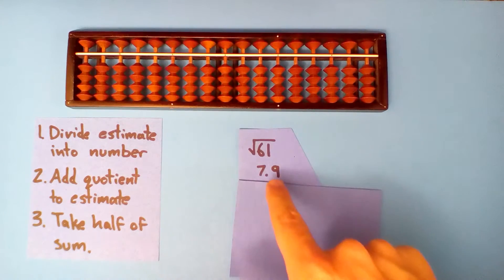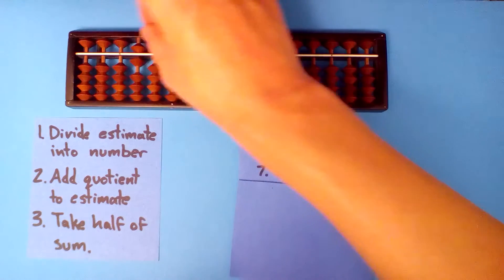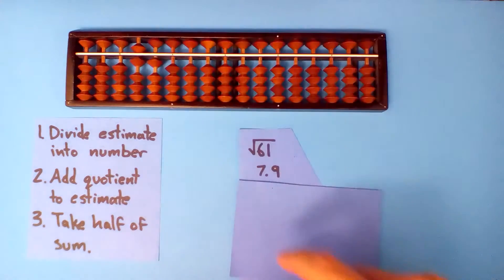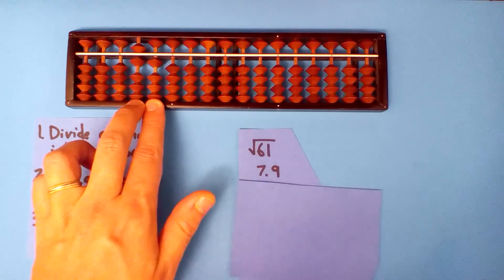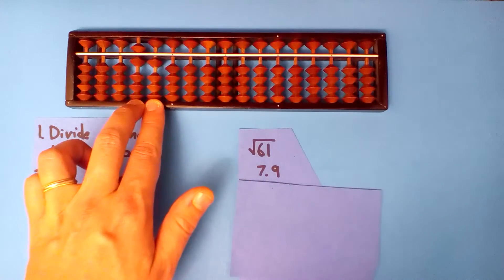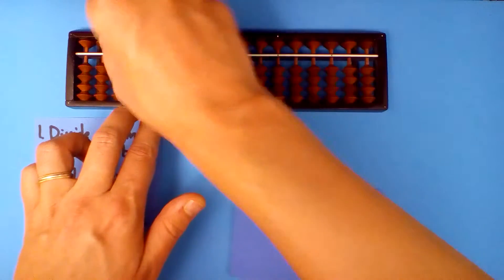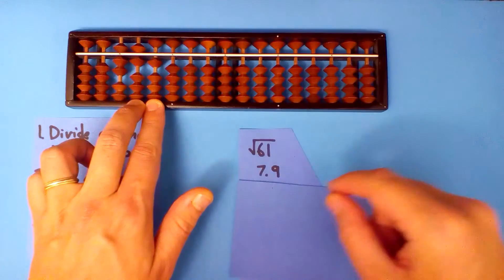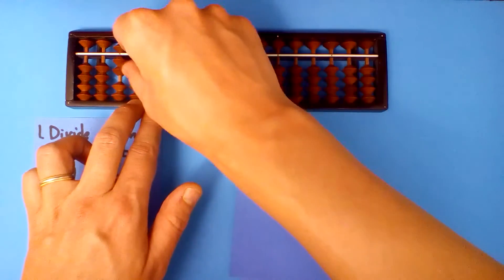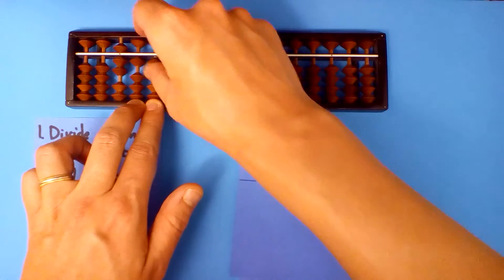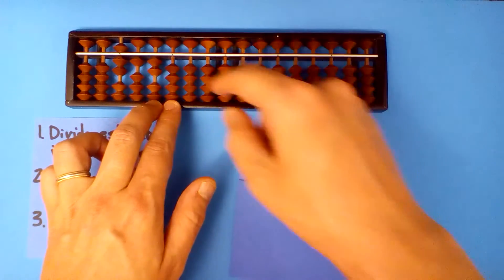Let's divide 7.9 into 61. 7.9 into 61, 7 times. 7 times 7 is 49. 7 times 9 is 63.